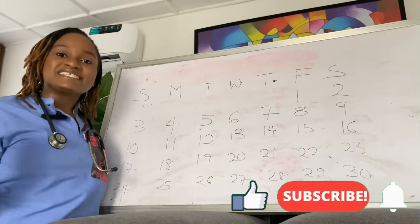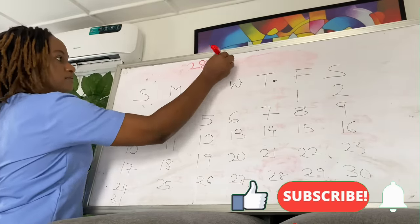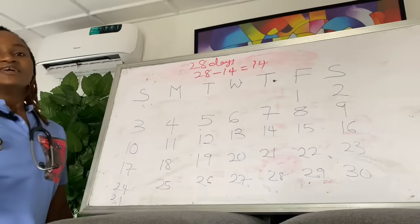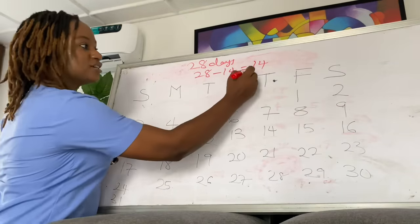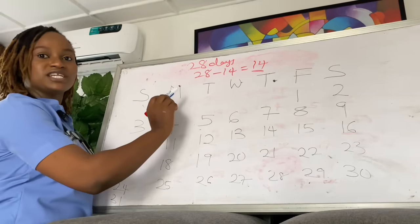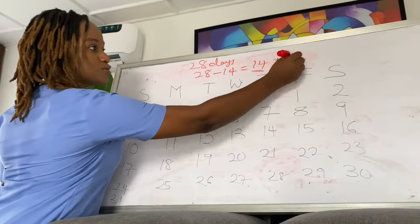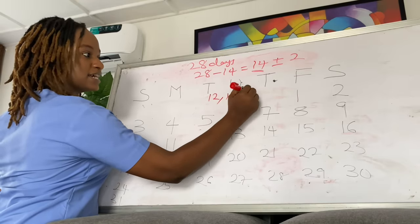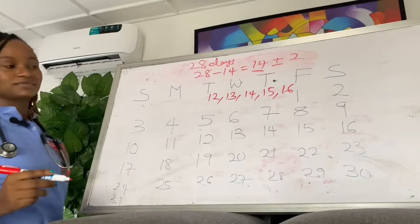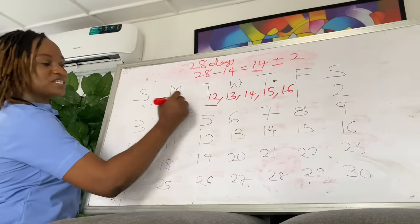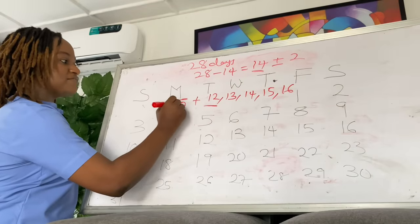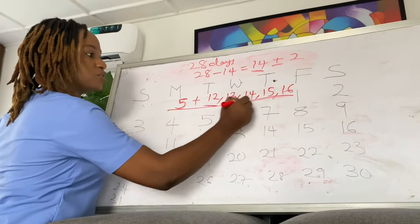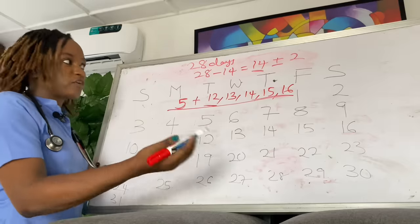For a 28-day cycle, ovulation will be 28 minus 14, which equals Day 14. It's not that you must ovulate on Day 14, but that is the most likely period. So applying plus or minus 2, you could be ovulating on Day 12, 13, 14, 15, or 16. You take the smallest, which is Day 12, and add five days to it — because sperm can live for five days in the reproductive organs — and that gives you your fertile window.